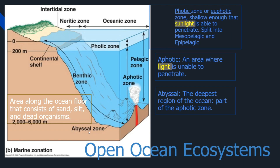In the open ocean there are three main zones. The photic zone, as its name suggests, is shallow enough that light penetrates — it can be split into the epipelagic and mesopelagic sub-zones. The aphotic zone has no sunlight whatsoever. The abyssal zone is the deepest part of the aphotic zone, where the word 'abyss' comes from. The neritic zone is the zone where water meets the land.